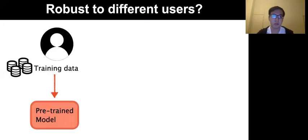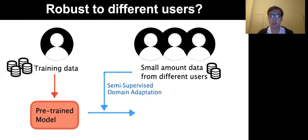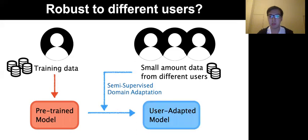We first pre-train a model with one source user. After that, we get a small amount of data from different target users. Then we can apply semi-supervised domain adaptation techniques to fine-tune the model to adapt to new users with very low training overhead.